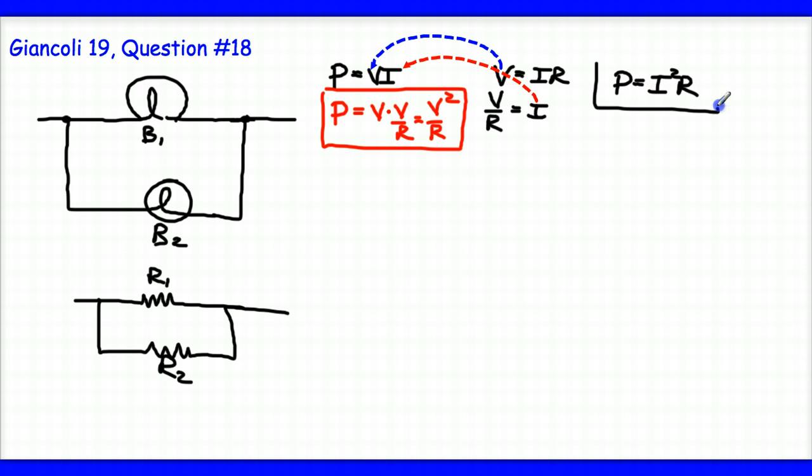This is something we might use in a different problem. In this particular problem, this one is most useful because I'm given the power rating of the bulb 75 watts and the voltage rating 110 volts, and the lower bulb is 40 watts and 110 volts.